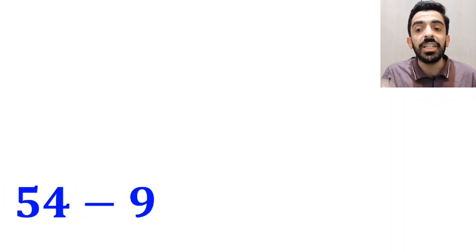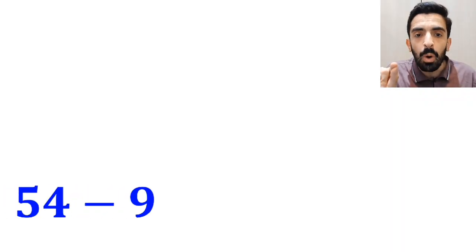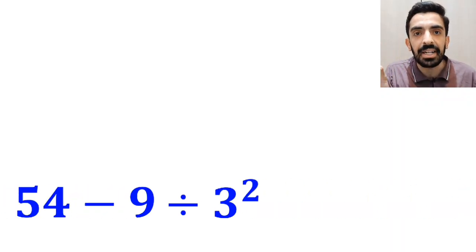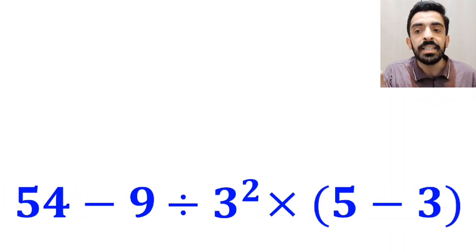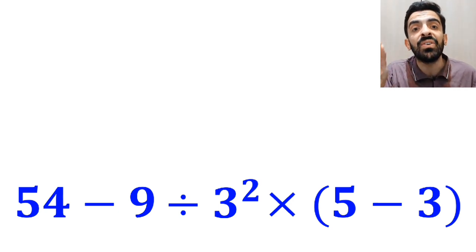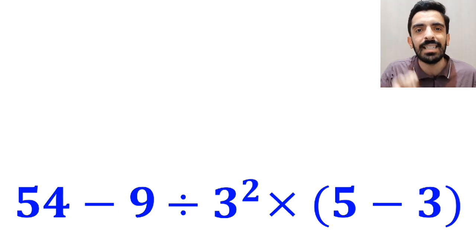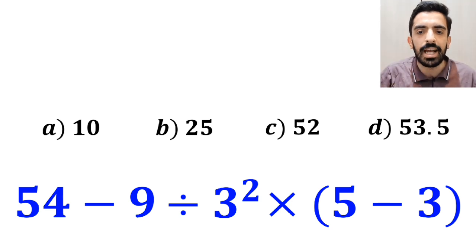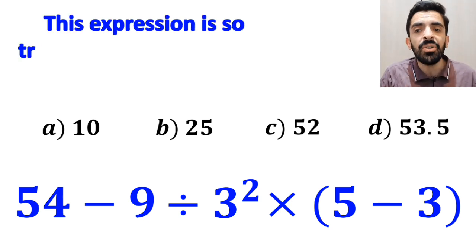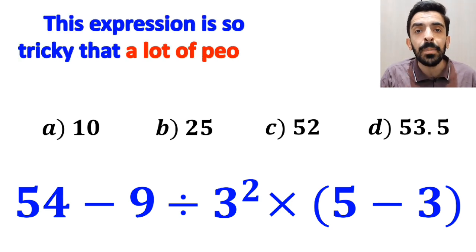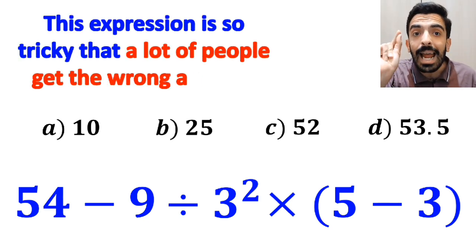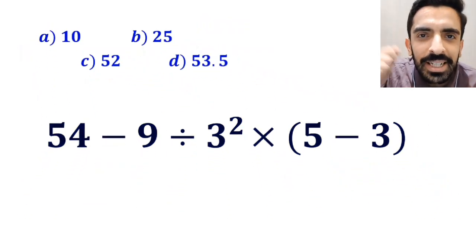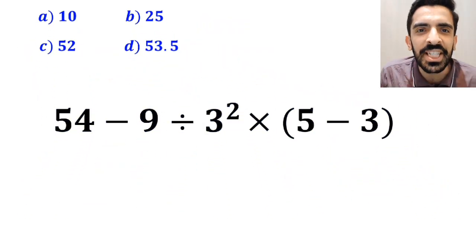What is the value of the expression 54 minus 9 divided by 3 squared, then multiply by open parenthesis 5 minus 3 close parenthesis? Which option do you think is the correct answer to this question? This expression is so tricky that a lot of people get the wrong answer. Let's break it down and solve it together.